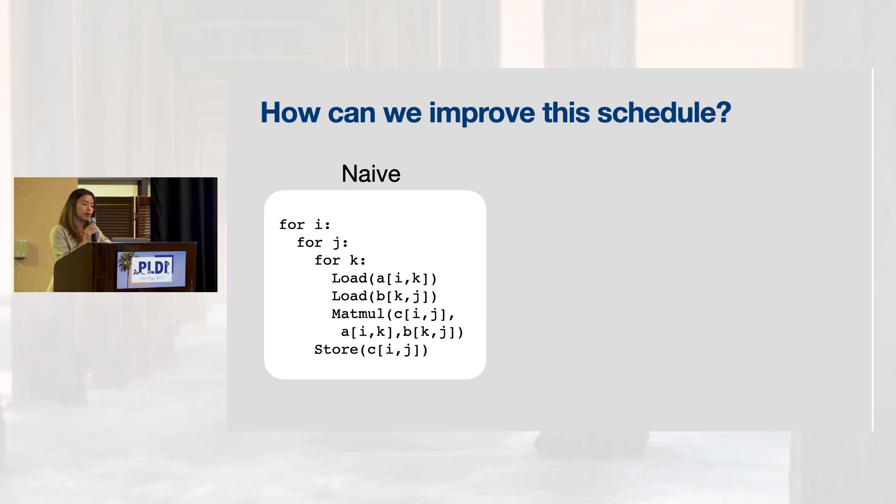When you look at these load instructions, you might notice that J is not used in load A, and I is not used in load B. It means that we are loading the same data for different I and J, which is redundant. This is problematic in this case because it makes this Matmul code memory-bound. How might we improve this?